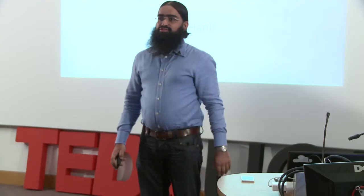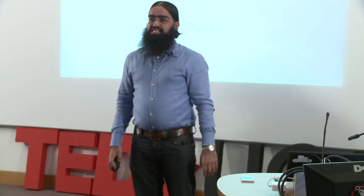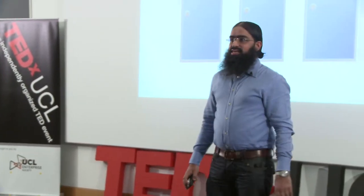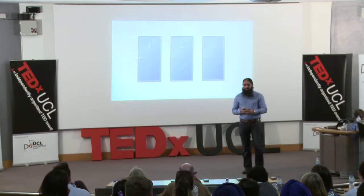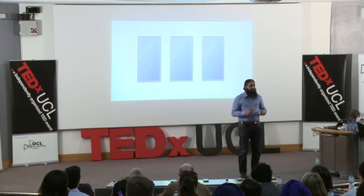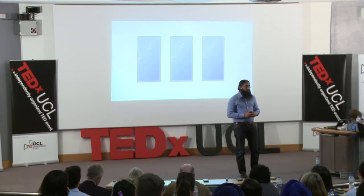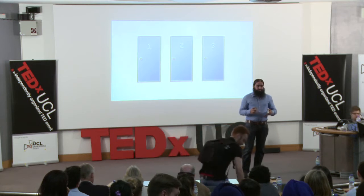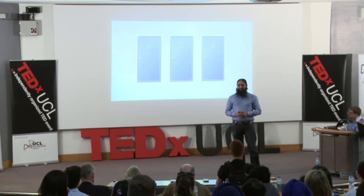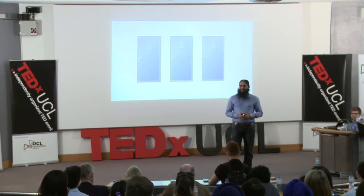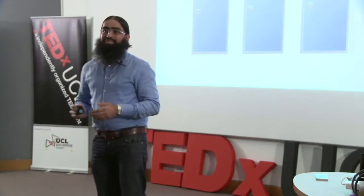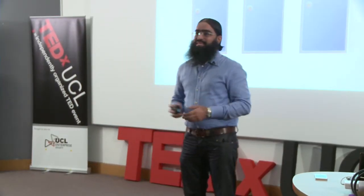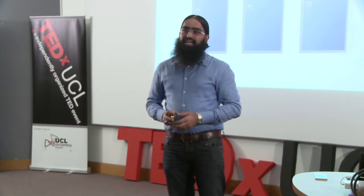I'll be talking about the paradox of uncertainty. Let's play a little game. Imagine we're at a game show and there are three doors. Behind one of the doors is a car and behind two of the doors are goats. Pick a door. Let's assume you were to pick door number one. Let me give you a little bit of a hand.